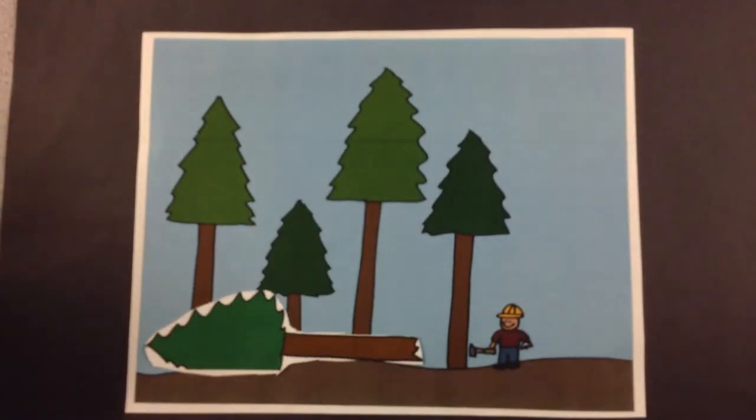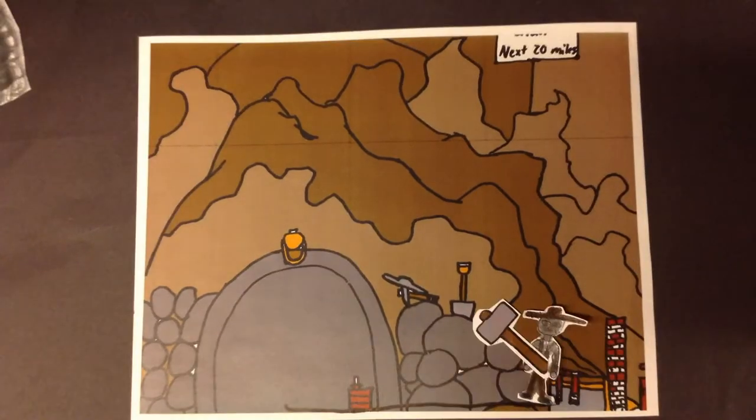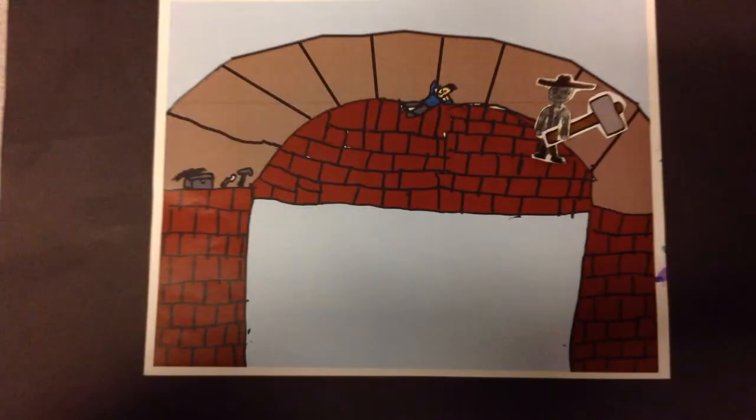In order to lay the tracks, forests had to be cut down, Rocky Mountain ranges blasted, bridges built across ravines and lands moved.